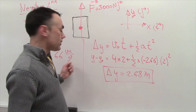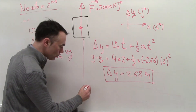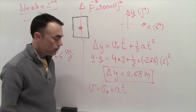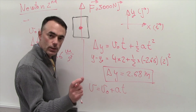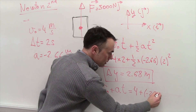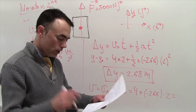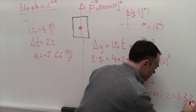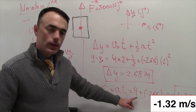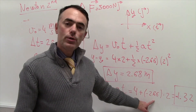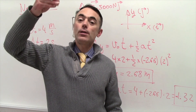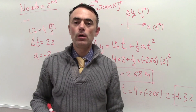What is the velocity at the end of this time interval? Using the kinematics equation v equals v₀ plus a times t, we substitute: initial velocity 4 m/s plus negative 2.66 times 2 seconds. This gives a velocity of negative 1.32 meters per second. So the elevator was going up, slowed down, and by the end of the 2-second window is moving downward.